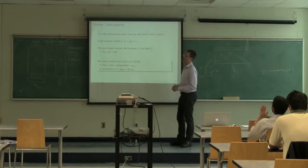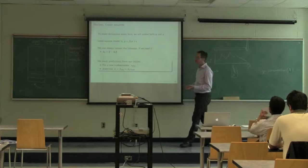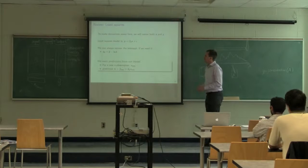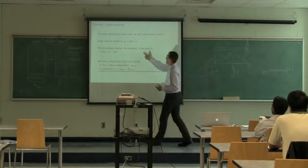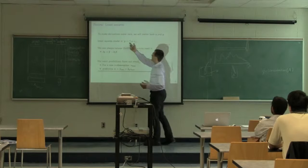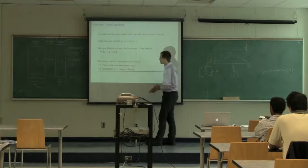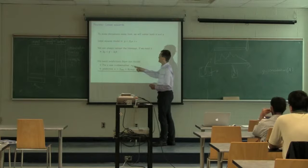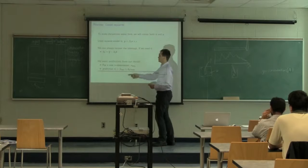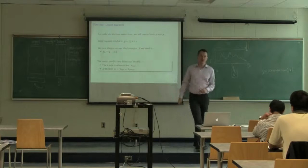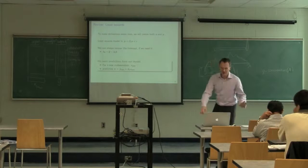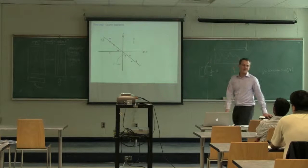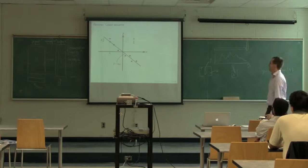Assuming the centered model y = b1·x: if we get a new observation X in the future, we can get our best prediction of Y by multiplying X by b1. That's straightforward. So we're going to pick up in a minute and move to multiple linear regression.